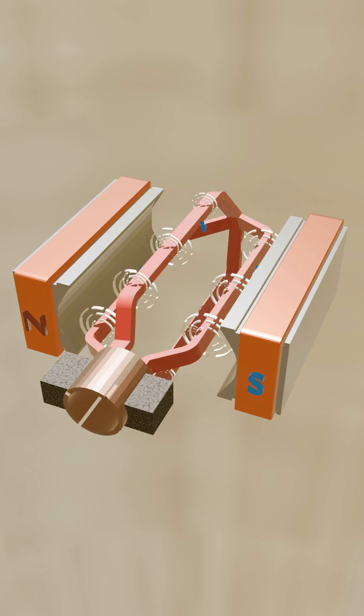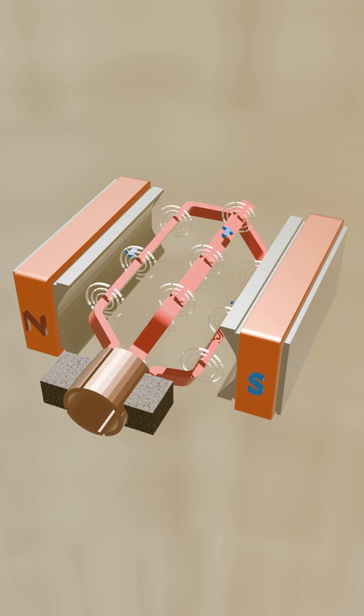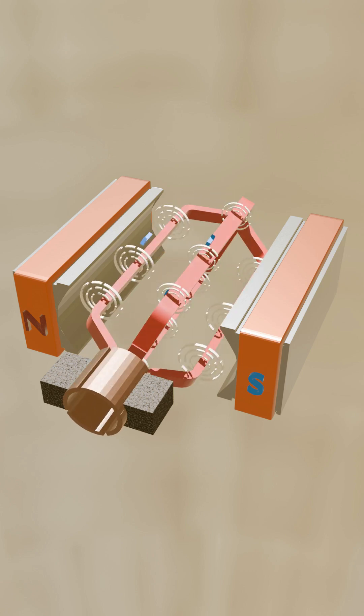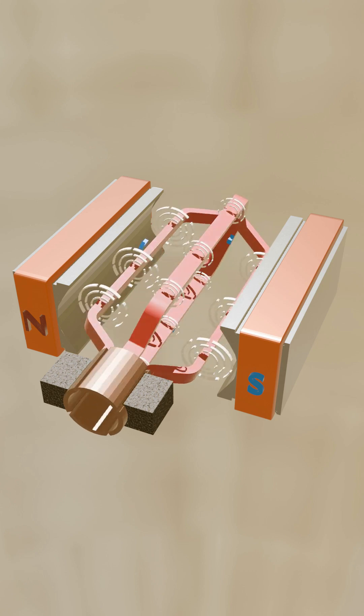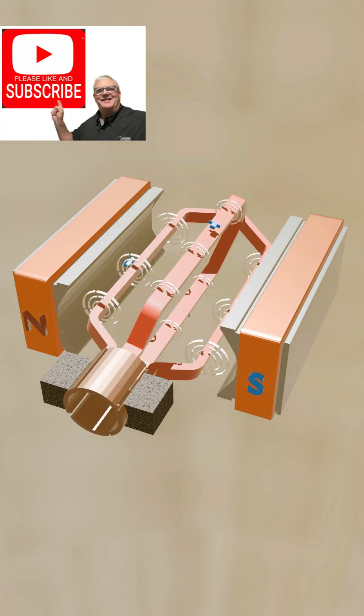Adding another armature coil and commutator bar segments ensures continuous rotation. As the coils rotate, the current is reversed at a position that is centered between the field poles. This precise position is called the neutral axis.